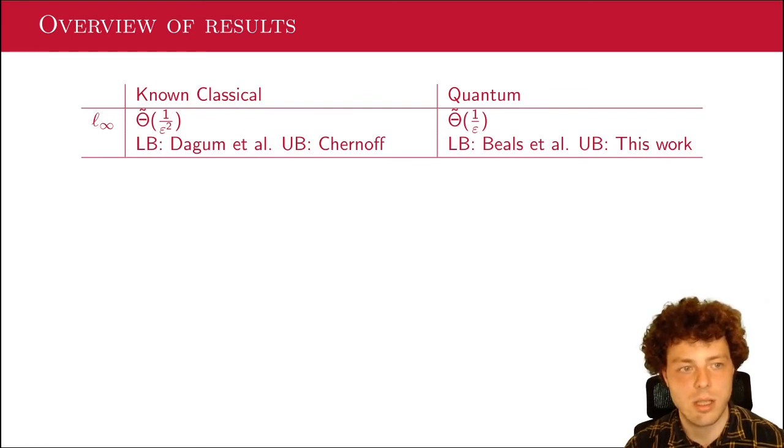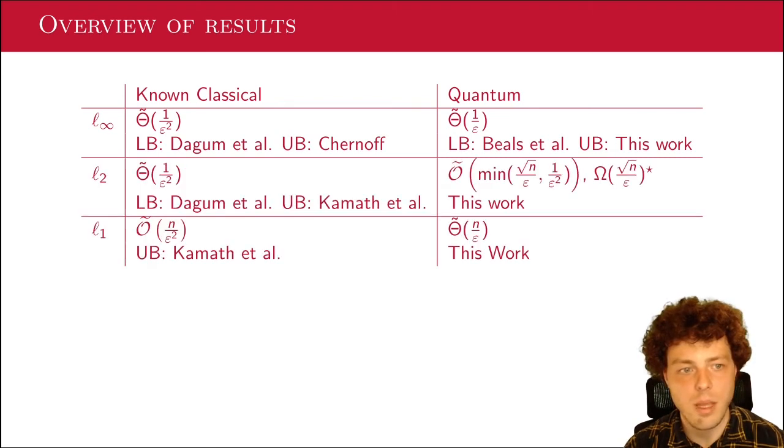So let me go to the overview of the results. We up to now mostly discussed L infinity norm. And in the classical case, we get 1 over epsilon squared as both lower bound and upper bound. The lower bound is due to Dacunha et al. And the upper bound is the Chernoff bound that I showed. And quantumly, the upper bound follows from this work, which is 1 over epsilon. And the lower bound follows actually from the lower bounds on parity, which is by Beals et al.